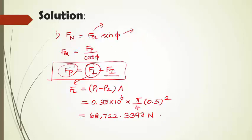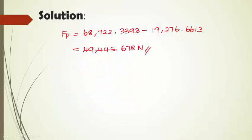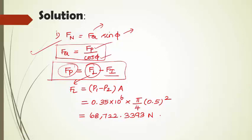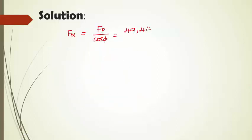To calculate Fq, we need the angle phi. We know that sin(phi) equals sin(theta) divided by N. With theta equal to 60 degrees and N equal to 4, sin(phi) equals 0.2165, from which phi equals sin inverse of 0.2165, that is 12.5 degrees. Now we can calculate Fq as Fp divided by cos(phi): 49,445.678 divided by cos(12.5 degrees), giving Fq equal to 50,646.1951 newton.